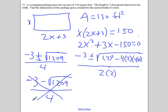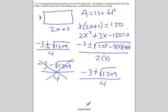So now I'll work with the plus option. Negative 3 plus the square root of 1209 over 4. Let's use more space.